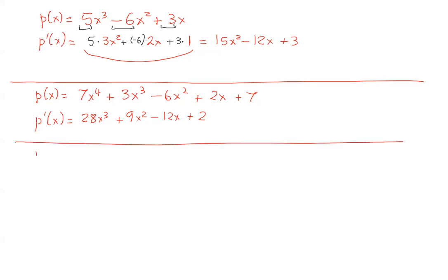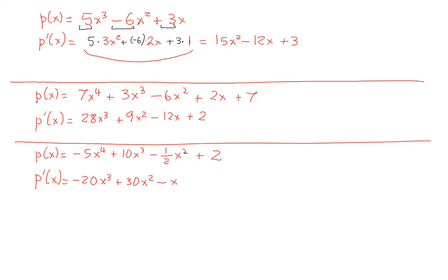Try this one yourself: p(x) = -5x⁴ + 10x³ - (1/2)x² + 2. Pause the video and find p'(x). The answer: derivative of x⁴ is 4x³, times -5 is -20x³; derivative of x³ is 3x², times 10 is 30x²; derivative of x² is 2x, times -1/2 is -x; and the derivative of the constant 2 is 0. So p'(x) = -20x³ + 30x² - x.